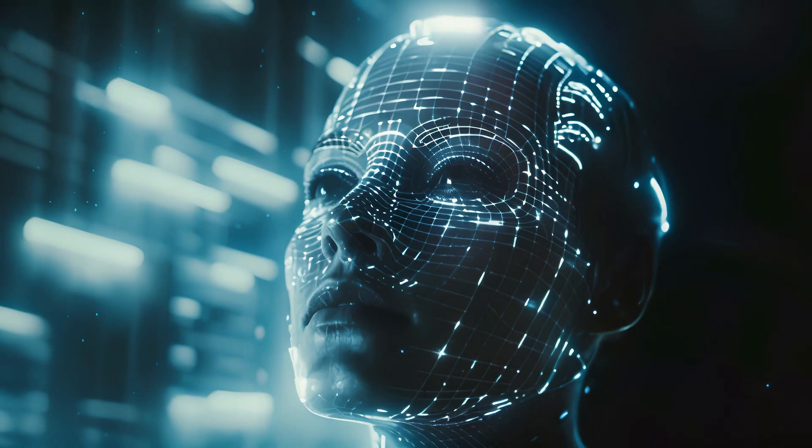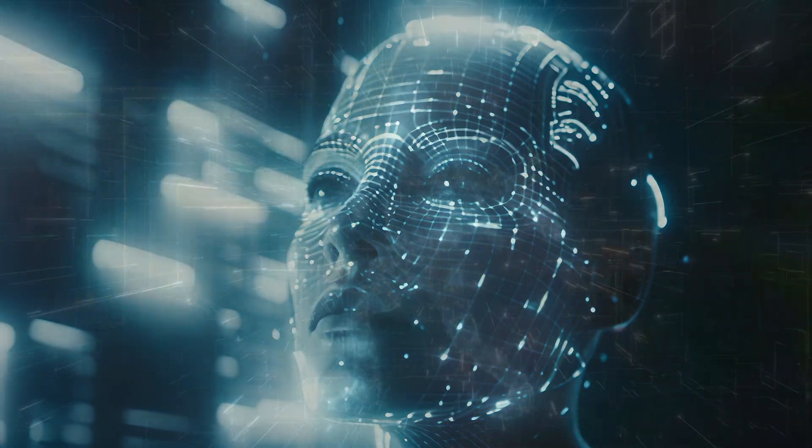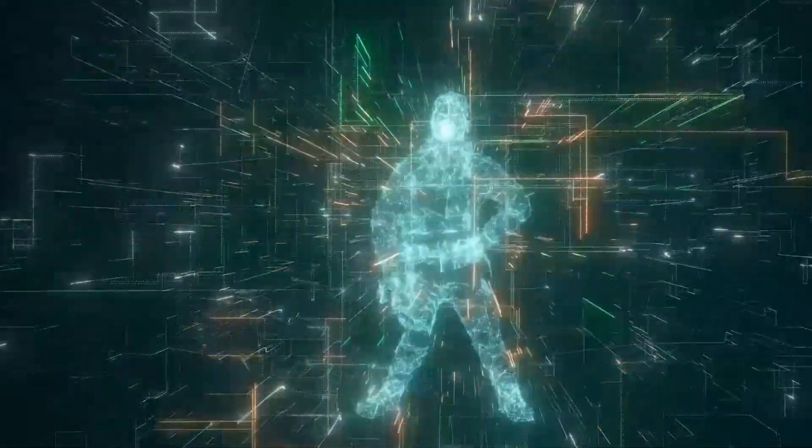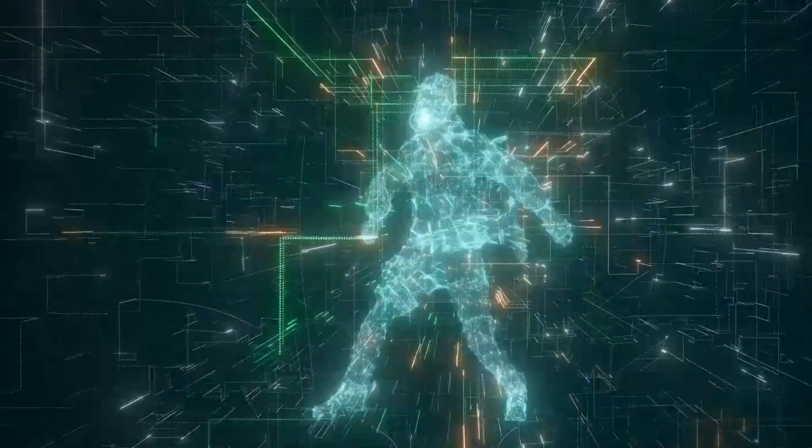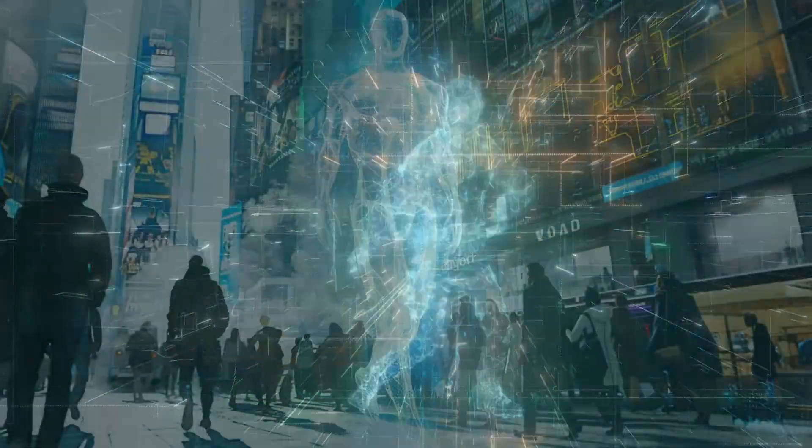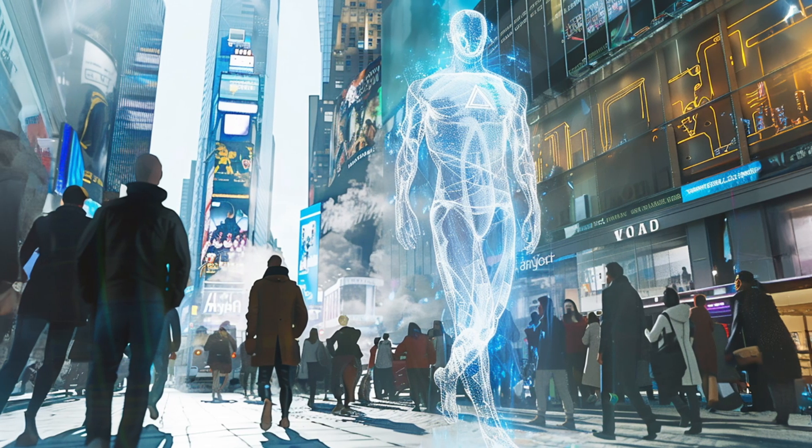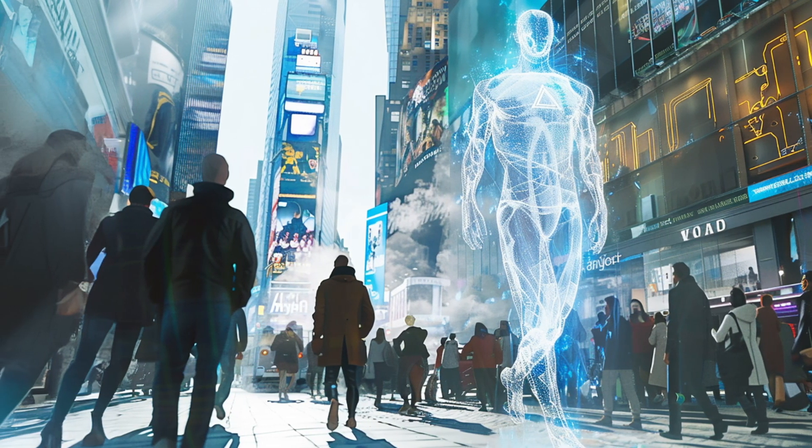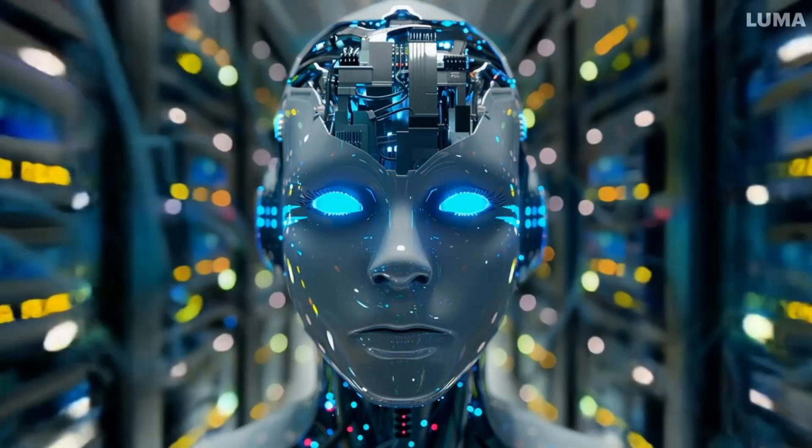Next is phase four, the superhero, artificial super intelligence, ASI. ASI would possess intelligence surpassing the combined cognitive abilities of all humans. It could solve complex problems and innovate at an unprecedented pace. Although we are still far from achieving ASI, some experts believe it could emerge shortly after AGI is developed. The implications of ASI are both exciting and challenging, as it could introduce advanced technologies and reshape various aspects of society.